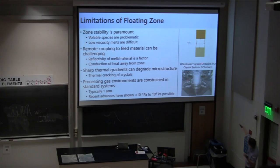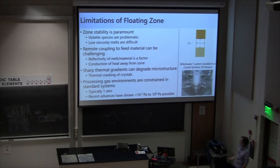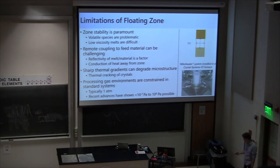Thermal cracking can often be mitigated by installing so-called after heaters. On the grown crystal side, you can install a resistive furnace that extends the thermal gradient and anneals and helps heal the microstructure degradation as you grow. Here's an example of an after heater system made by Crystal Systems. Another limitation is that processing gas environments can be constrained in standard systems, which typically run around an atmosphere of pressure. However, recent advances have shown that you can go from ultra-high vacuum at 10⁻⁷ Pascal all the way to 10⁸ Pascal now — so this limitation has been largely lifted in the past five or six years.